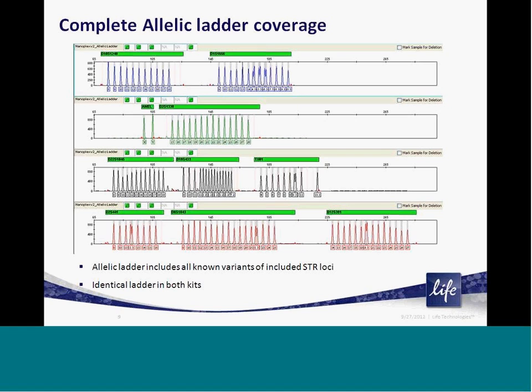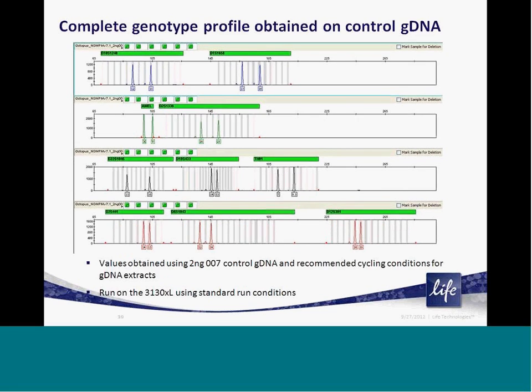Included in each kit and run with each capillary electrophoresis injection is an allele ladder. This ladder contains representative alleles of the most common alleles at each loci and is used as a reference to determine the genotypes of your unknown sample. In addition, a positive control genomic DNA is included with each kit and is recommended to be run with each amplification batch, ensuring the kit and your amplification is functioning properly and you are resolving the appropriate and expected genotypes.